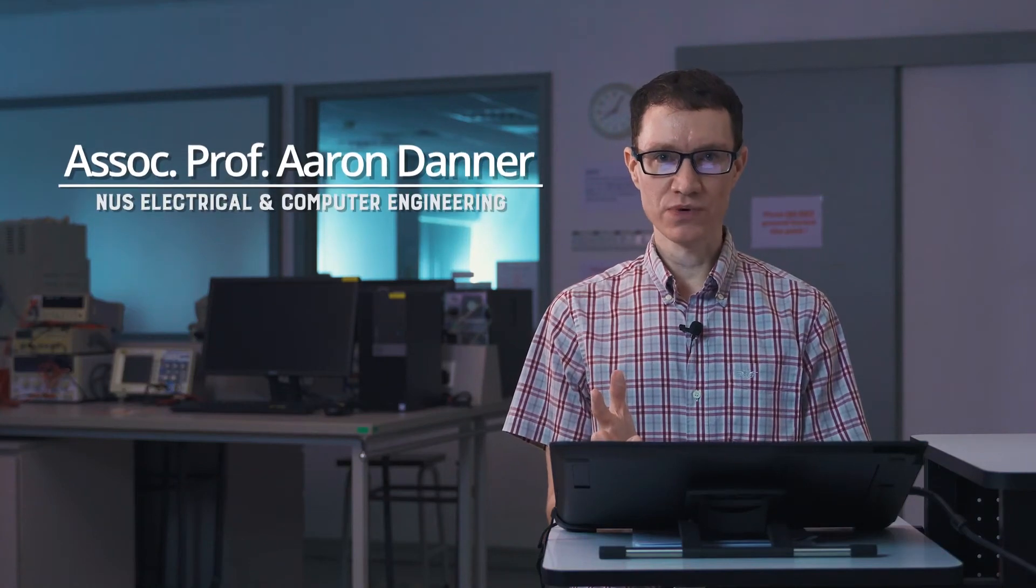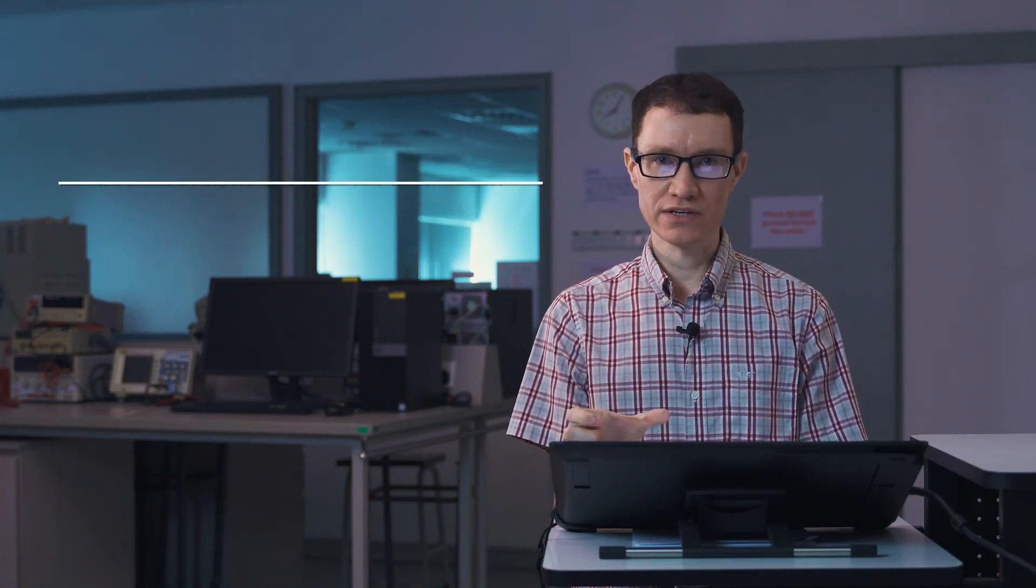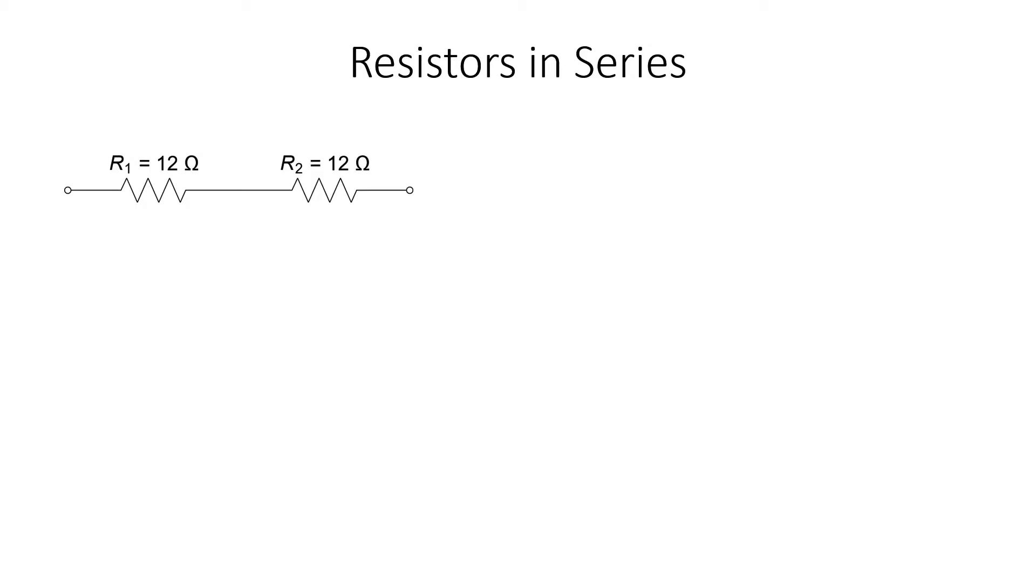I'd like to talk about what happens when you wire up resistors in series or in parallel. Let's take a look at a specific example. Right now we're looking at a case where we have two 12-ohm resistors wired in series. We're going to replace these two resistors with one equivalent resistor. And I want to be very clear when I say equivalent. What does this mean?